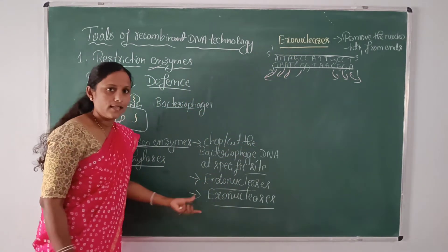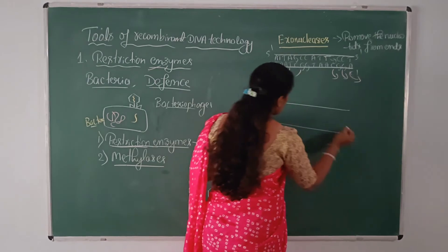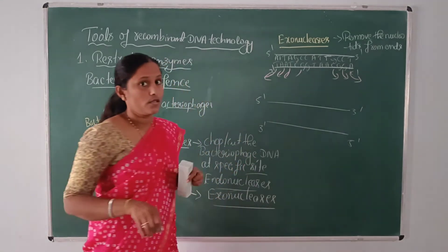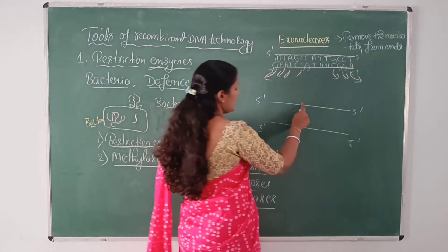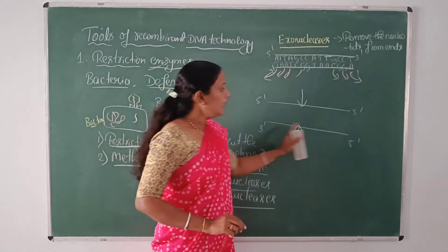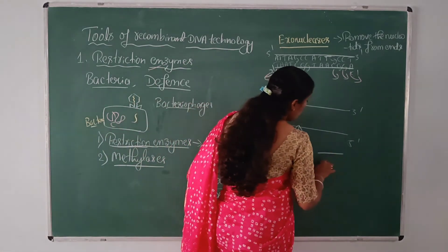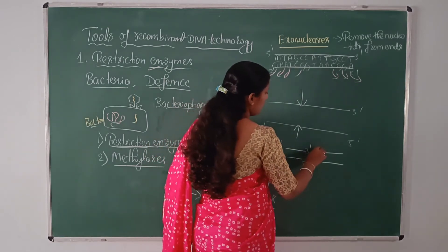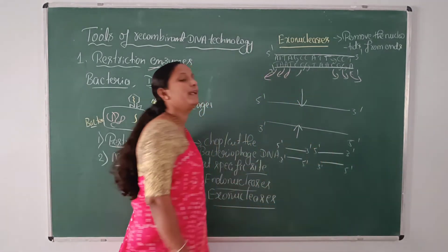Endonucleases, on the other hand, recognize specific sequences in the DNA — they do not cut randomly. When they cut the DNA at the specific sequence, there is a formation of two fragments of DNA, each with its 3 prime and 5 prime ends.